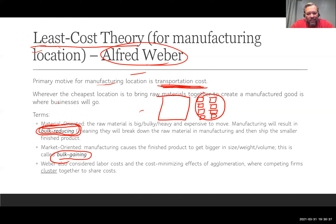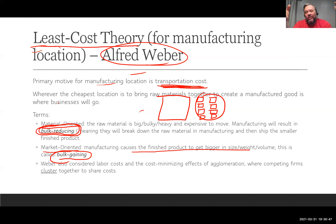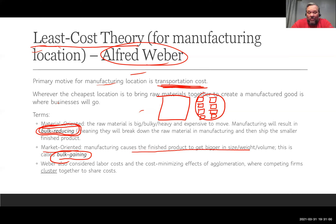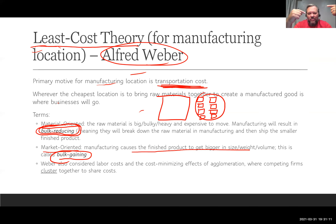The opposite is bulk-gaining, also called market-oriented manufacturing. Here the finished product keeps getting bigger as you manufacture it — think of building a car: you start with individual pieces and end up with a large finished product. Because shipping the final product is expensive, it makes sense to locate the factory closer to the market you're selling it in.